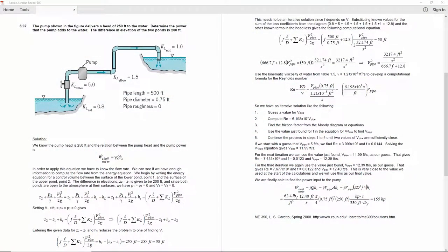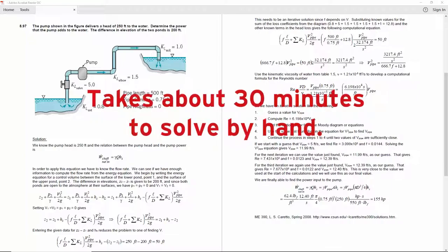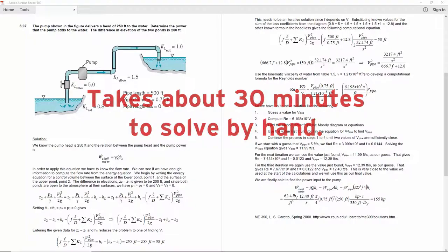If you solve this problem by hand, you would have to apply the energy equation for a control volume and then manually iterate for a solution. With all of these steps and iterations, it's easy for a single algebra or calculator error to cause you to get the wrong answer.